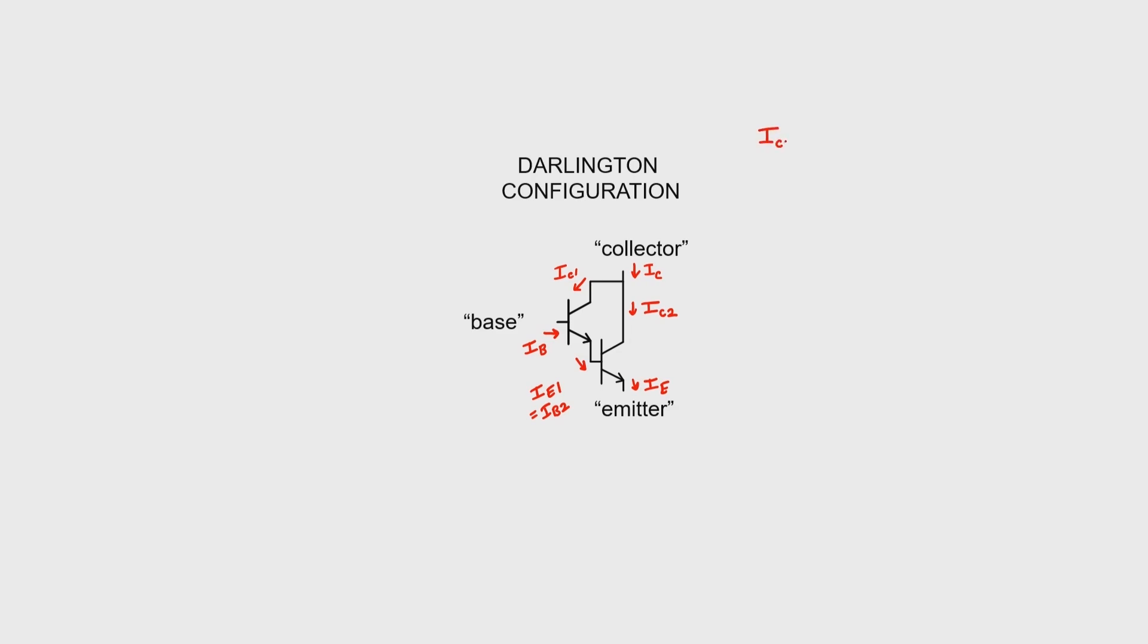From the first transistor, I know that the collector current is beta times IB. We could call it beta 1. If I call this transistor 1, we'll call the beta of this transistor 2. We have a similar equation for transistor 2. We now have beta 2 times IB2.